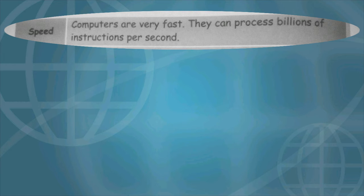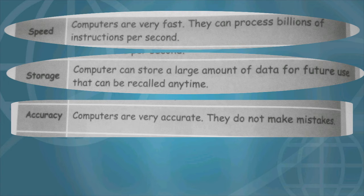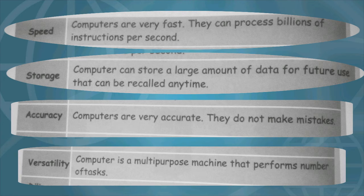Characteristics of Computer: Speed. Computers are very fast. They can process billions of instructions per second.